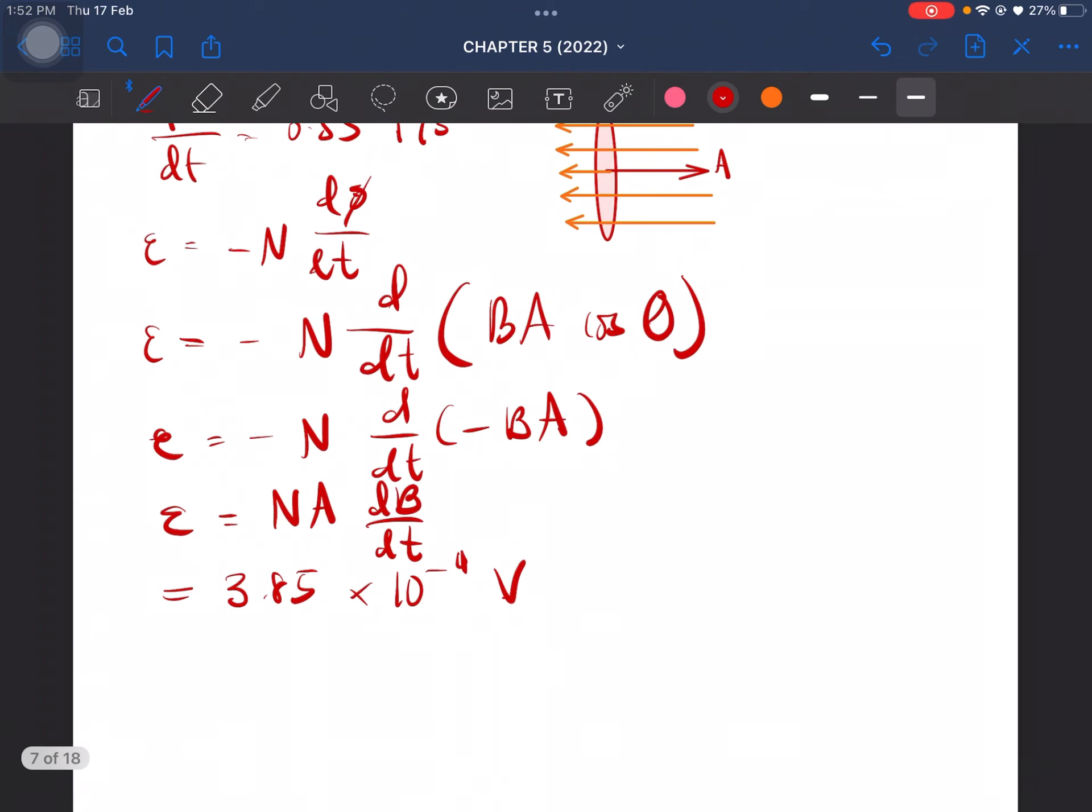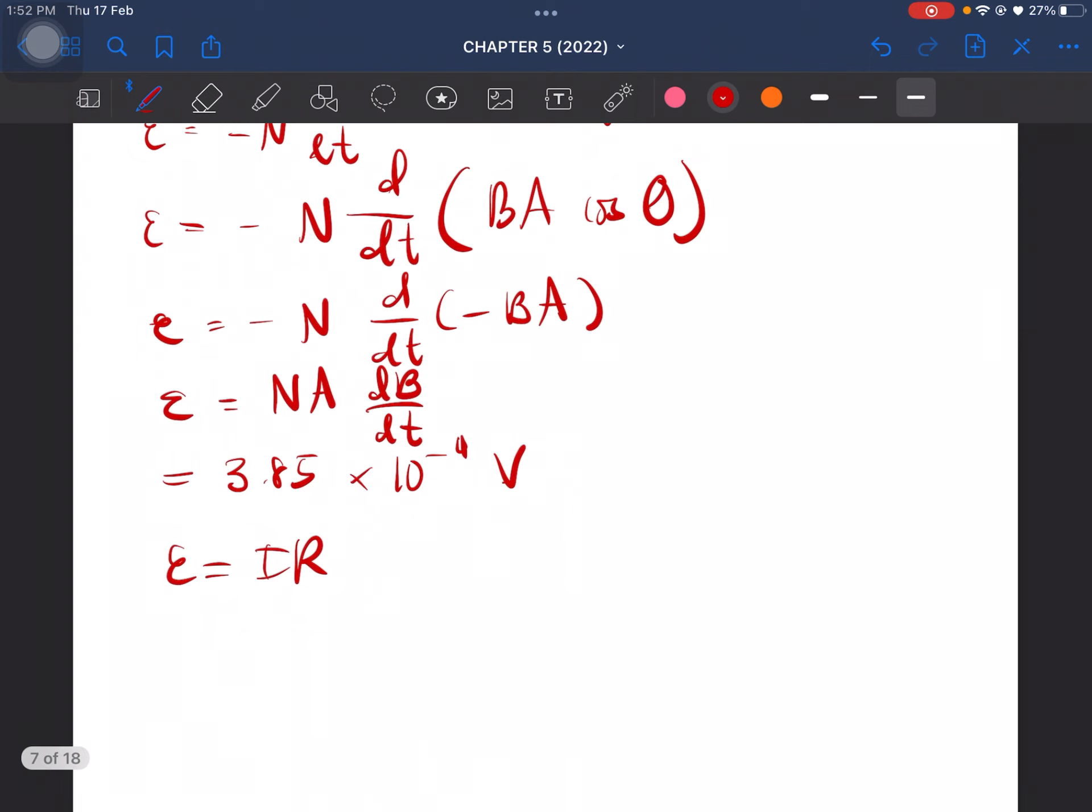And then the induced current is equal to EMF over R. So I is equal to 1.93 times 10 negative 5 ampere. That is the induced current.